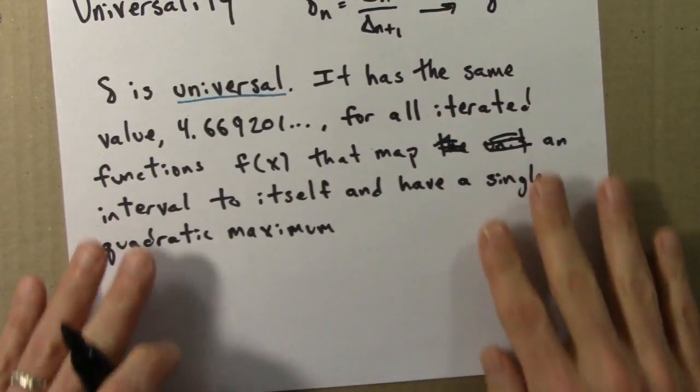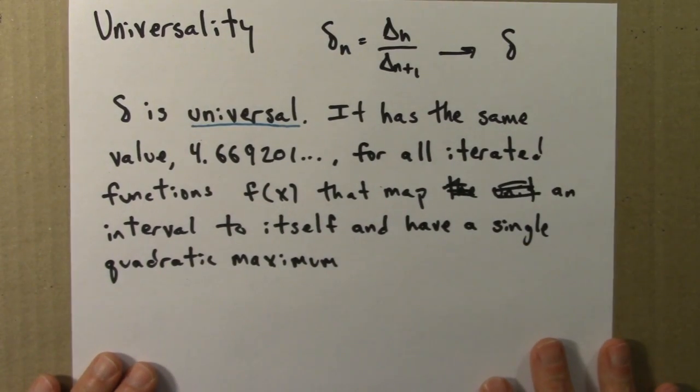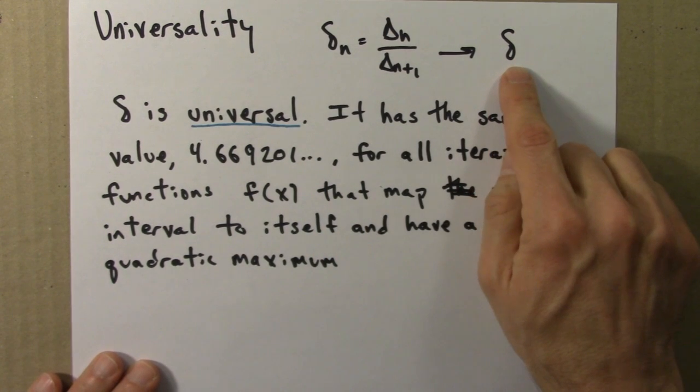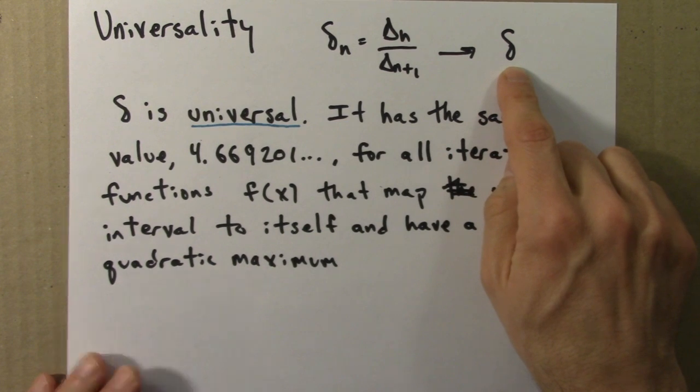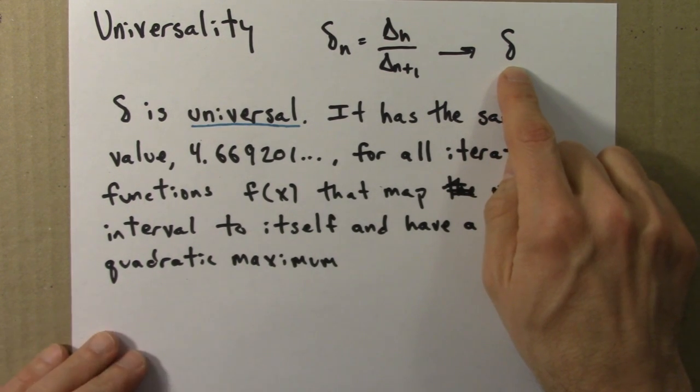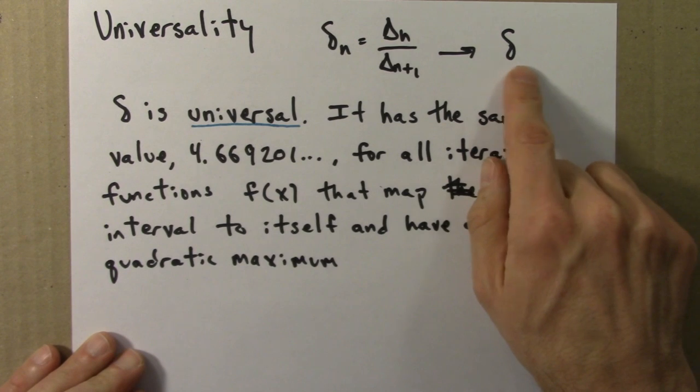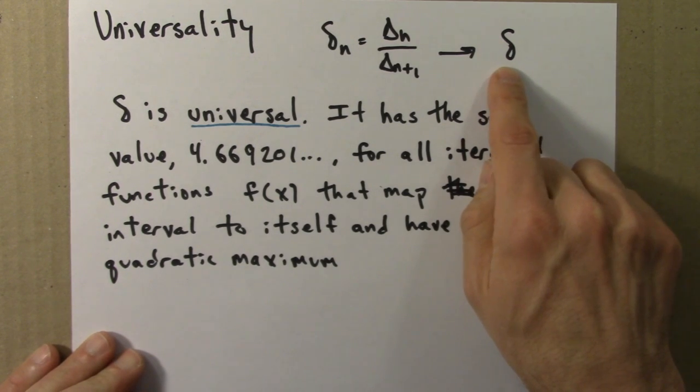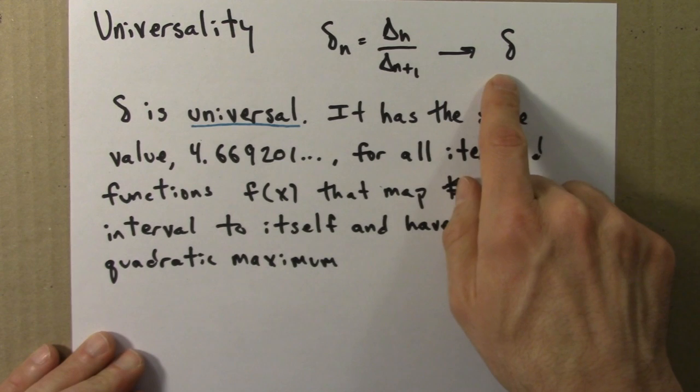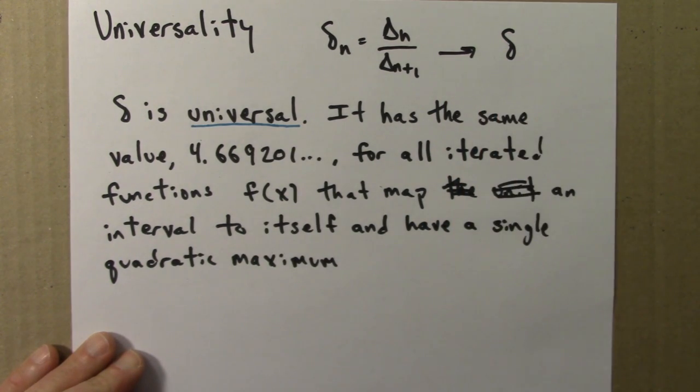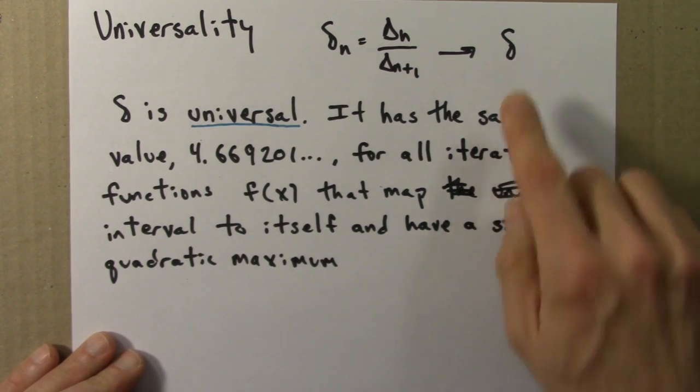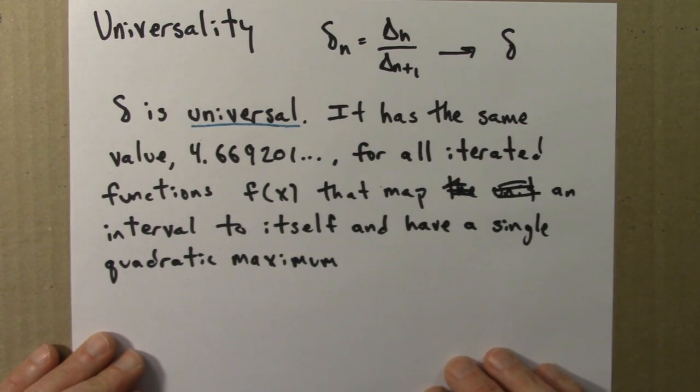So let me state this once more. This property delta, which is a feature of how the sideways use those shapes on the bifurcation diagram, how they're related to each other, how much smaller each one gets as we get closer to this transition, that this geometric quantity delta is universal. It has the same value, 4.669201, and it goes on and on for all iterated functions f of x that map an interval to itself and have a single quadratic maximum.